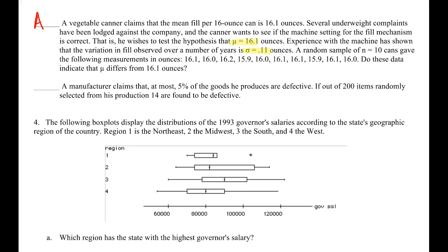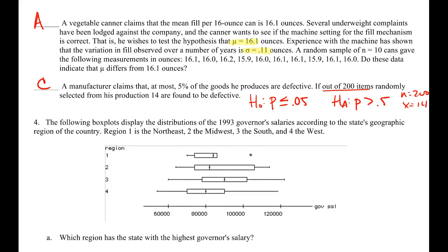The last question has a claim that at most 5% of the goods are defective. We have one sample of 200 items, so we have a P we're testing. He says at most 5%; we probably want to see if it's actually greater than 5%. We have our N and our X, so we are dealing with a one-sample proportion Z-test. Hopefully that helps out with this type of question.